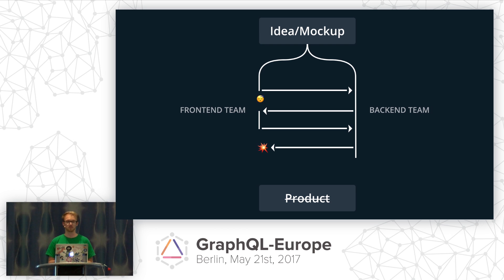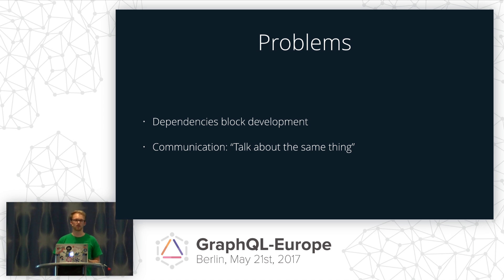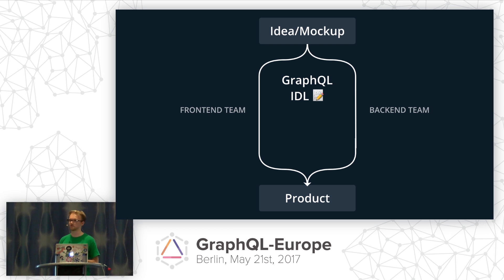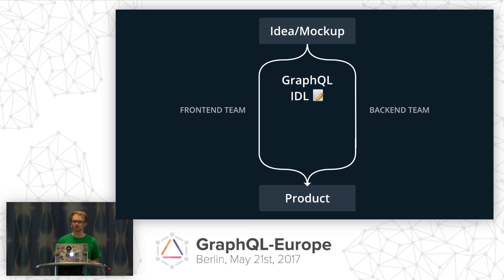In some cases, miscommunication between teams can even kill projects. The biggest problem is partly a communication problem — what's really missing is that all teams need a medium to talk about the same thing. The perfect medium for this is called GraphQL IDL. Before actually starting to implement the product, all teams can sit down together, analyze all of the requirements, and design the schema using the IDL notation. This becomes the contract for all teams going forward — and that's exactly the idea of schema-first development.